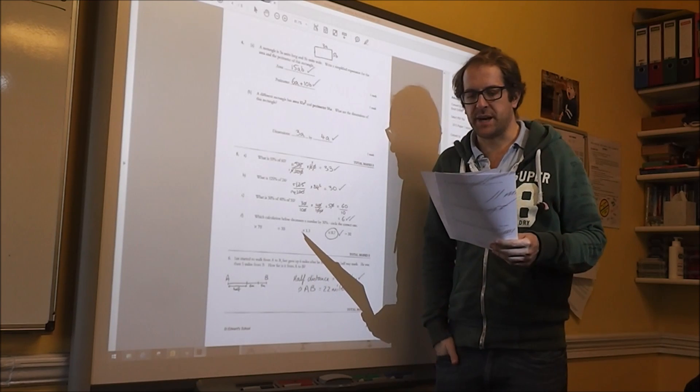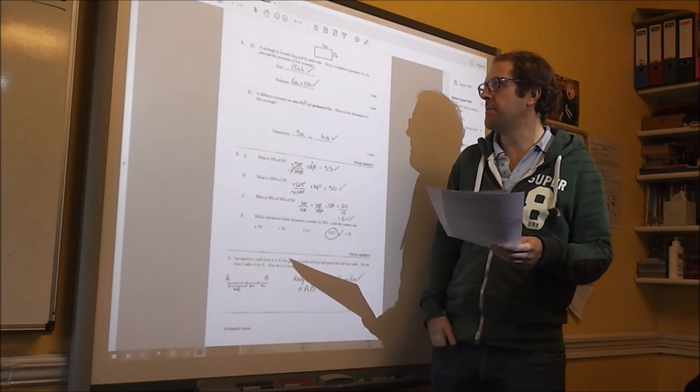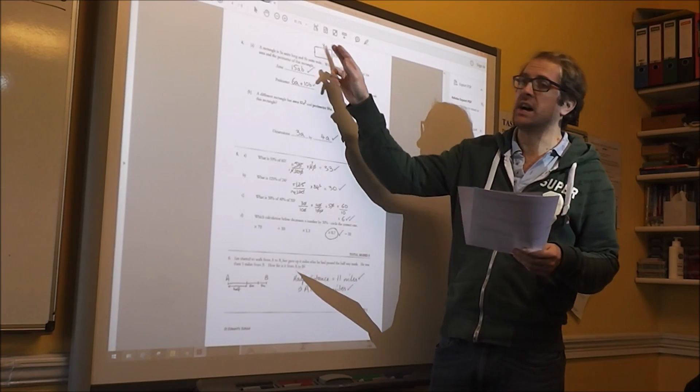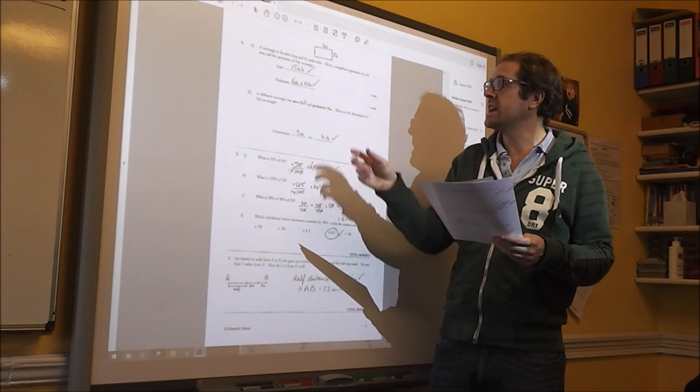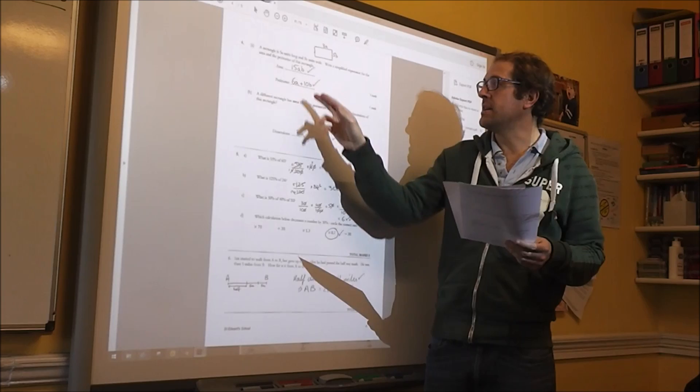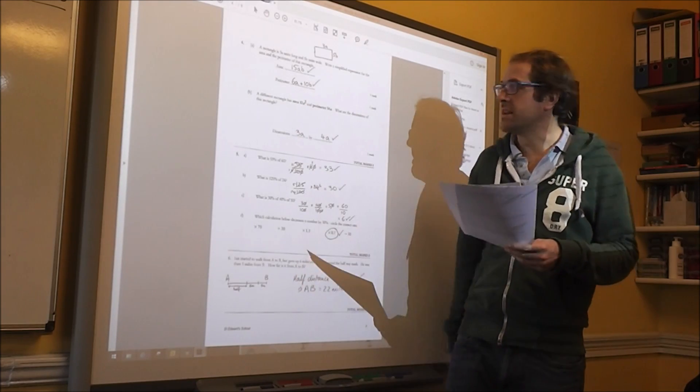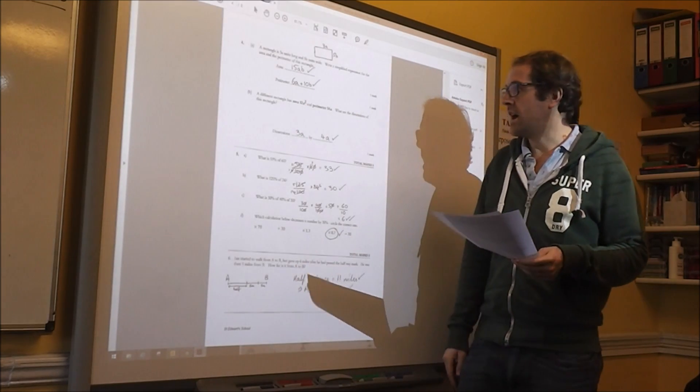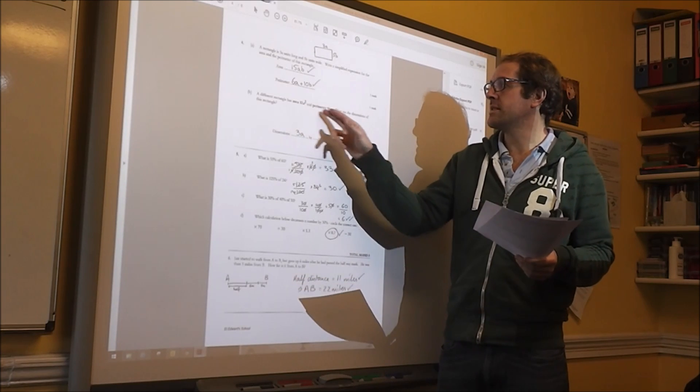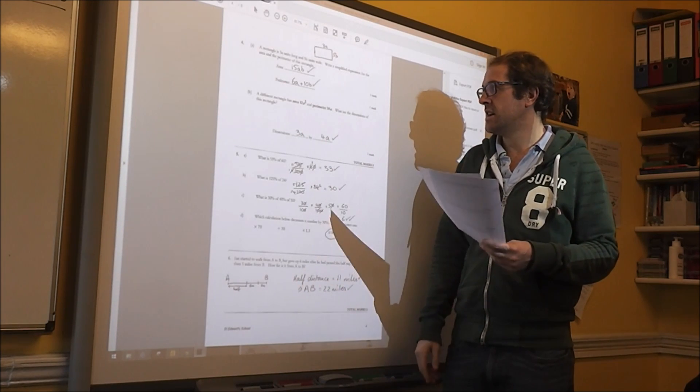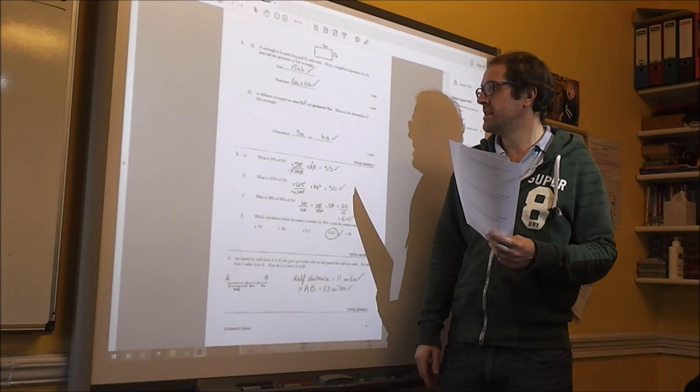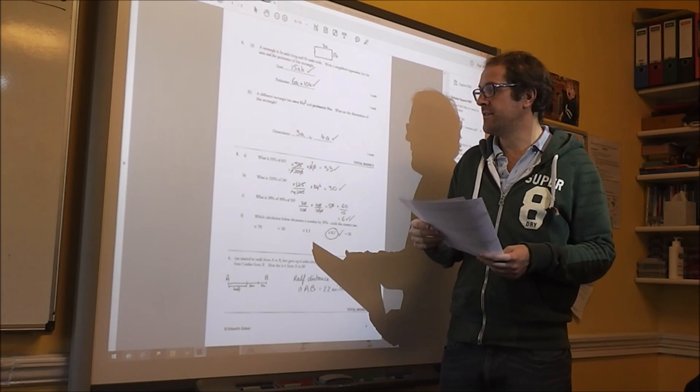Question 4 is about a rectangle. The area, I drew a quick little diagram to help me with my thinking. So the area is 15ab and the perimeter is 6a plus 10b. And then you've just got to work backwards from the area and the perimeter. And then you get 3a and 4a.